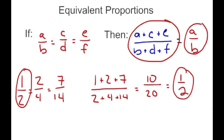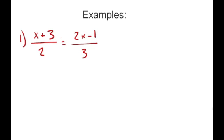If you want to try it, you could do a string of four or eight equivalent ratios. As long as they're all equivalent to each other, if you add all the numerators together and divide by all the denominators, you'll come back to the simplest form of those ratios.